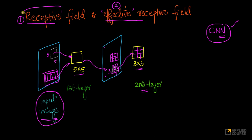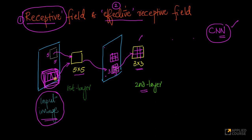So the receptive field is simply the region of the image a kernel operates on at a given time t. The effective receptive field becomes important in a multi-layered CNN, where in the second, third, fourth layer, the effective region of the original image whose pixels have directly or indirectly contributed to the current convolution operation is much larger. That's why the effective receptive field is much larger in the original image.